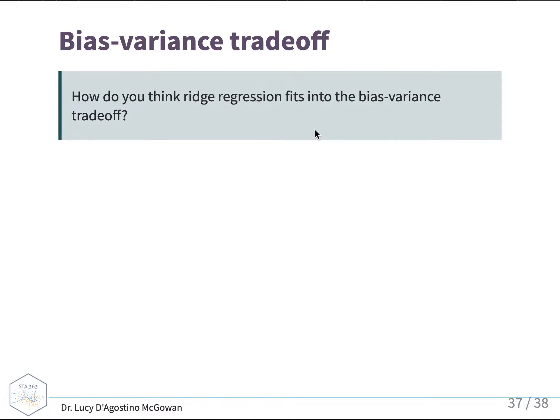So how does ridge regression fit into the bias-variance tradeoff? This whole class is pretty much about the bias-variance tradeoff. It's going to fit in just like we've talked about so far: as lambda, our tuning parameter, goes up, our bias is going to increase and our variance is going to decrease. Basically we're trying to find that lambda value that hits the sweet spot between bias and variance.